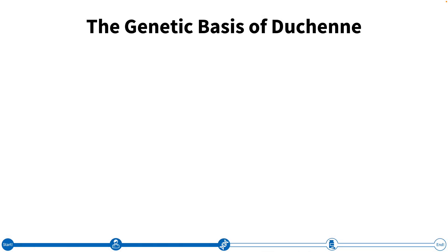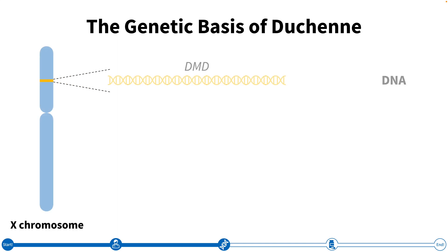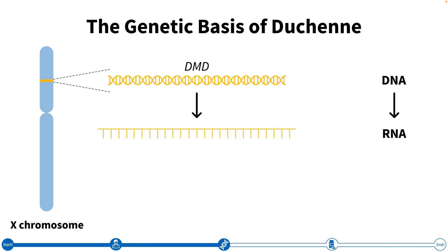Now let's apply what we've learned about moving from DNA to protein to understanding the genetic basis of Duchenne. Duchenne is caused by changes to a gene on the X chromosome called DMD. Of all the genes that exist in our 23 chromosomes, DMD happens to be one of the longest — it contains 79 exons. Following transcription into RNA, the RNA transcript is translated into a protein called dystrophin.